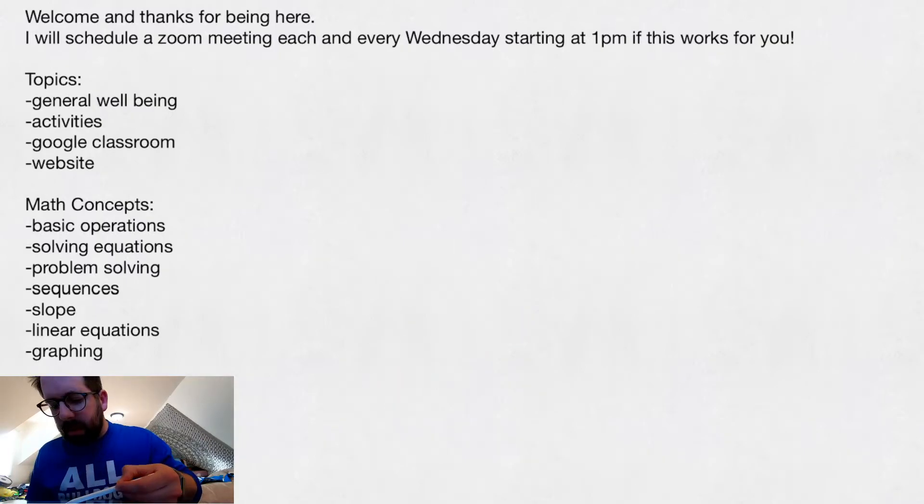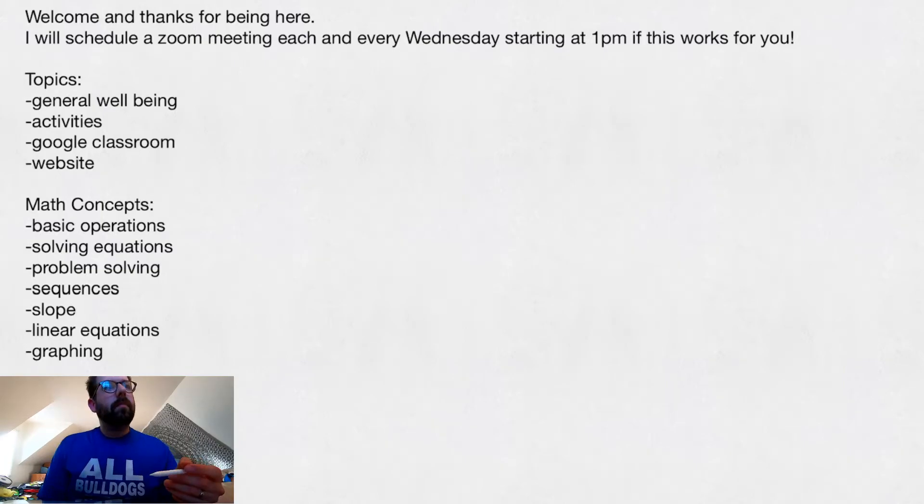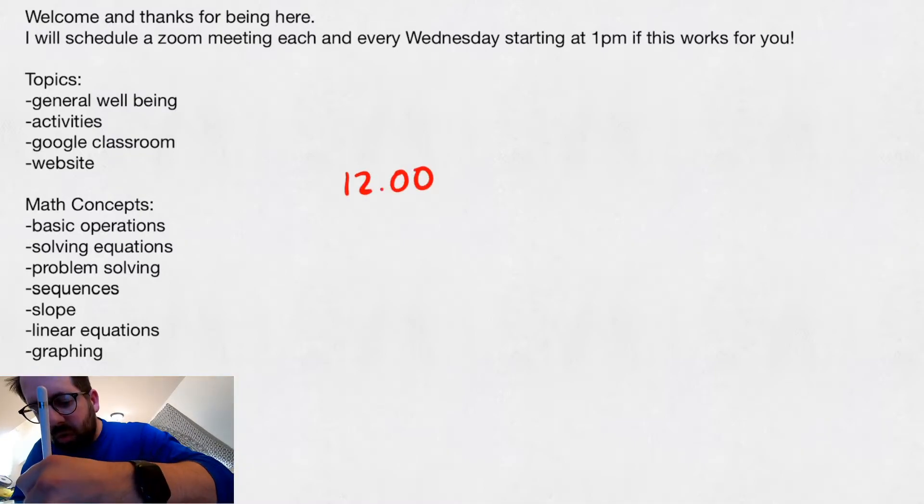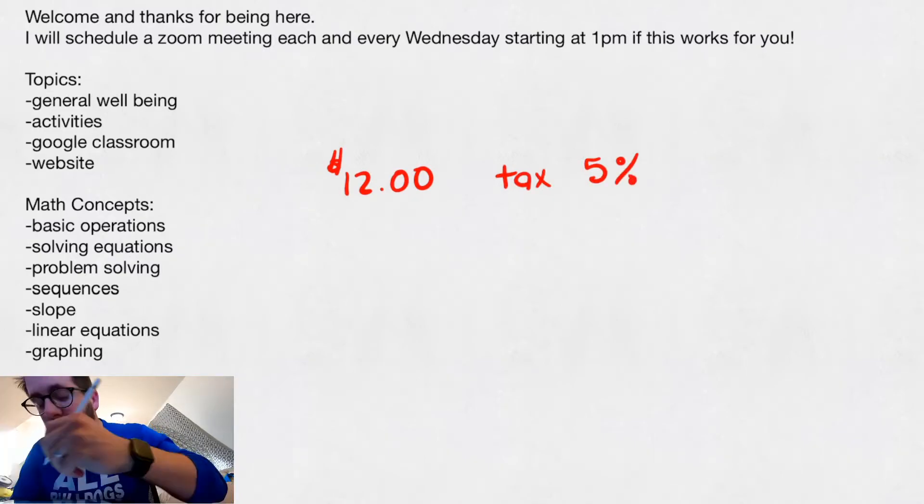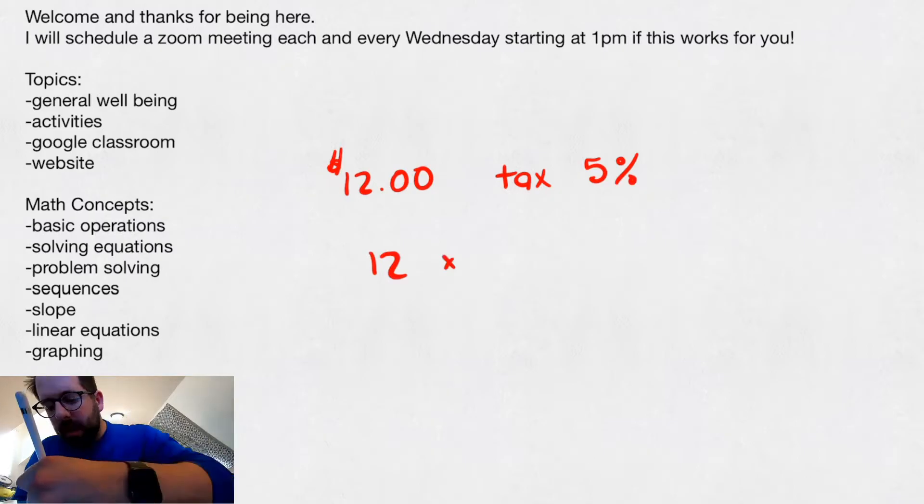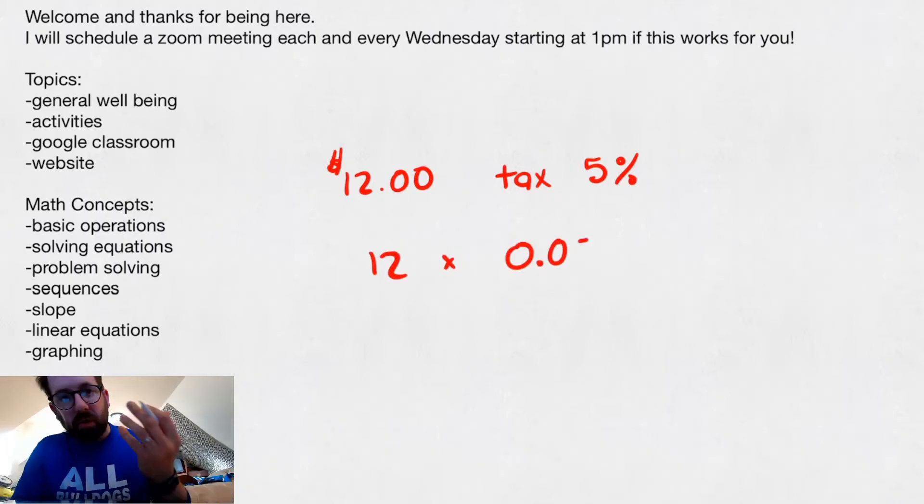The second part of that assignment was from 28. It was based on discounts and percents, like a percent of change. So let's say you had an item that was $12, and you're going to get taxed on it. Tax of 5%. So what you do is you take $12 times that tax rate. Now, tax is in percents, so you have to change it to a decimal.